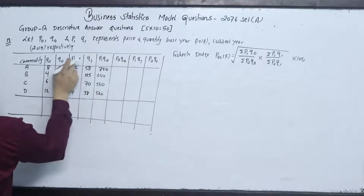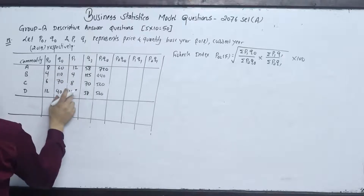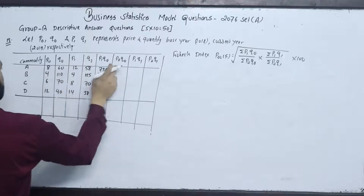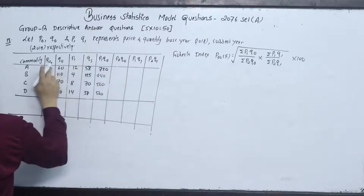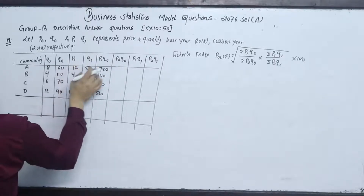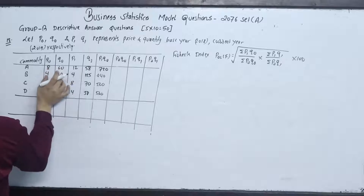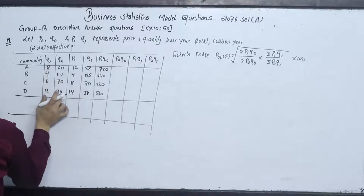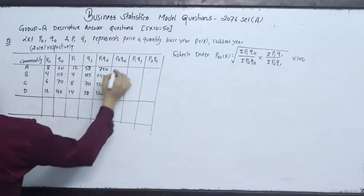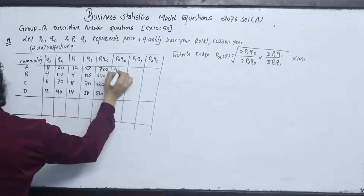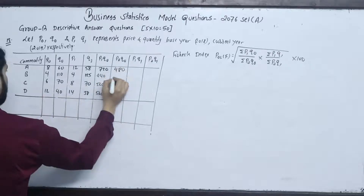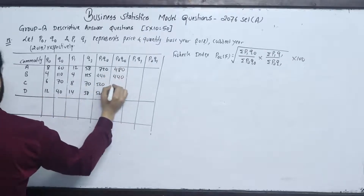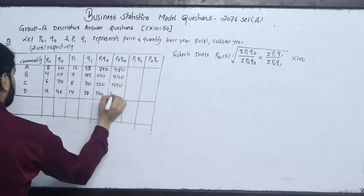Now multiply for P0Q0. We have: 8 into 60 = 480, 4 into 110 = 440, 6 into 70 = 420, 12 into 40 = 480. So summation P0Q0 = 1820.